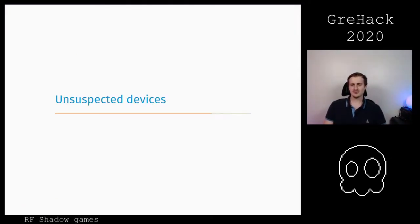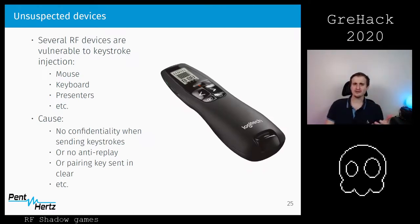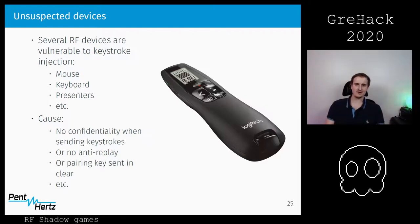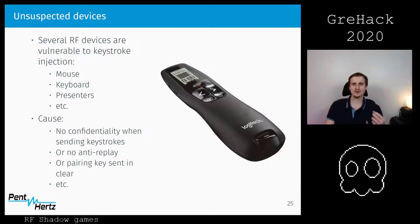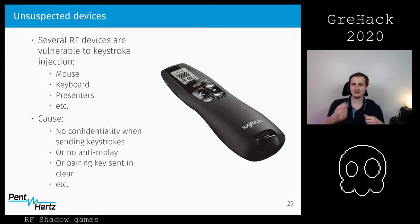There are also unsuspected devices that are more difficult to predict. A lot of people use wireless keyboards, wireless mice, etc. Many of these devices are vulnerable to keystroke injection — mice, keyboards, presenters. The cause is that sometimes there is no confidentiality when keystrokes are sent — they're transmitted in cleartext, or encrypted in a way that allows replaying the same code, or there is no IV on the keystroke so you can replay it.